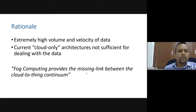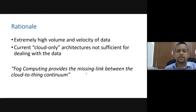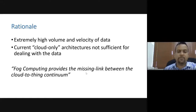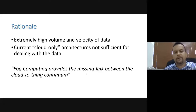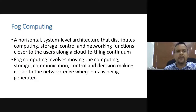Since we now intend to have extremely high volume and velocity of data — volume in terms of amount, velocity in terms of frequency — a cloud-only architecture is not sufficient for dealing with that data being generated. This is called a cloud-only architecture. The idea of fog computing provides the missing link between the cloud-to-things continuum — the connection from sensors, meaning the things with sensors embedded in them, to the cloud. So we have something missing in between, and this is where the idea of fog computing comes in.